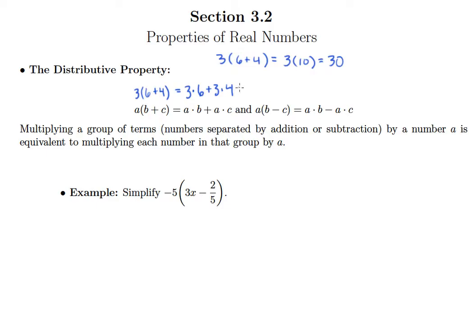And, you know, we better get 30, right? If these truly are equivalent ways of simplifying. Three times six is 18, three times four is 12, and sure enough, 18 plus 12 is 30.